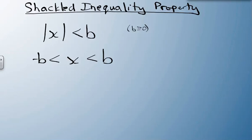So if the absolute value of x is less than something, we can rewrite it as that negative something is smaller than x, and x is smaller than the positive. It also works with less than or equal to as well.